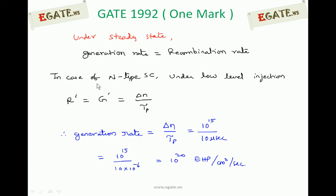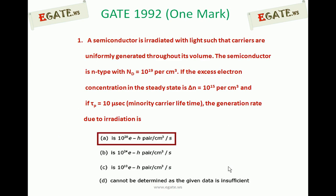So under steady state, recombination rate equals generation rate, which is delta N divided by tau p. Delta N is given as 10 power 15 and tau p is 10 microseconds, giving 10 power 20 electron hole pairs per centimeter cube per second. So the correct answer is A: 10 power 20 electron hole pairs per centimeter cube per second.